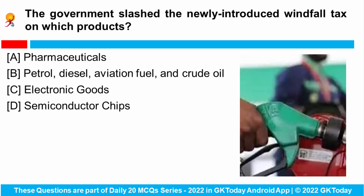The government slashed the newly introduced windfall tax on which product? A windfall tax is a type of tax placed on companies that have unreasonably high profits due to unusual favorable market factors. The government has implemented this windfall tax on petrol, diesel, aviation fuel, and crude oil and products.